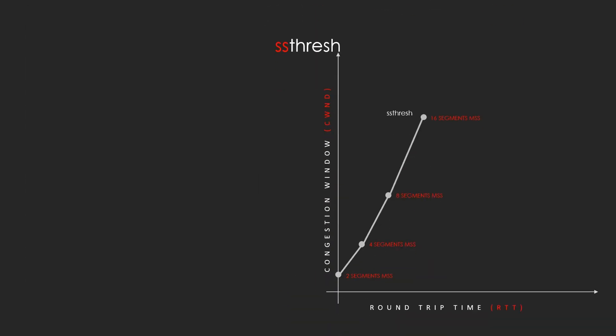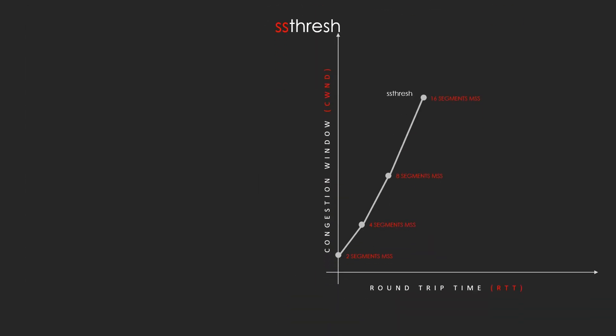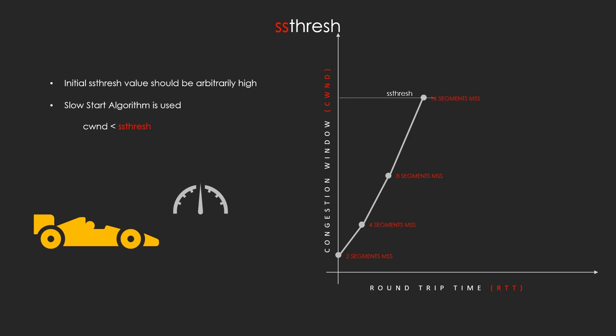The next concept is the slow start threshold (ssthresh). The initial value of ssthresh should be arbitrarily high. The slow start algorithm is used when the congestion window is less than ssthresh. If ssthresh equals the congestion window, the sender may use either slow start or congestion avoidance. You can think of ssthresh like a speed limit sign on a highway that determines the maximum allowed transmission rate.